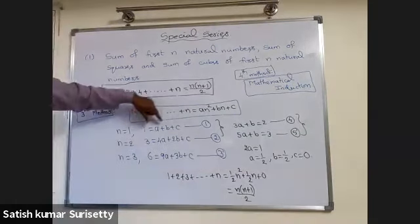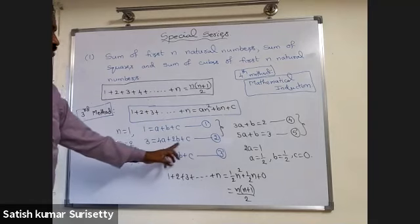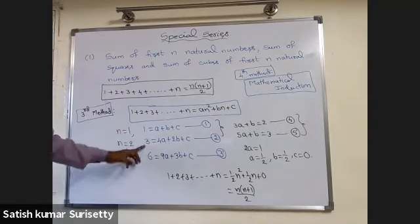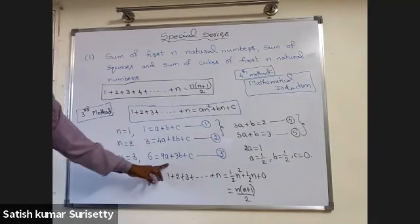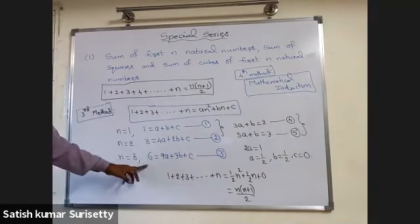The three equations are: a plus b plus c equal to 1; 4a plus 2b plus c equal to 3; and 9a plus 3b plus c equal to 6.